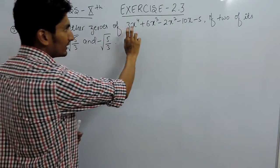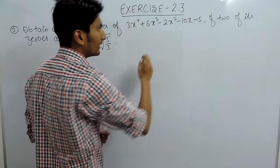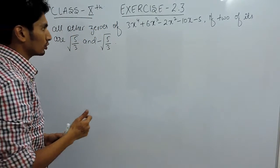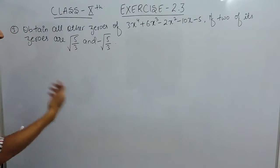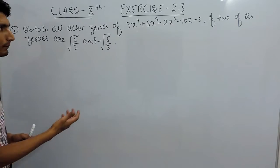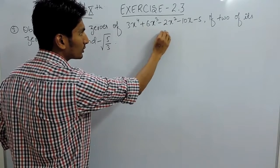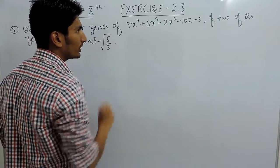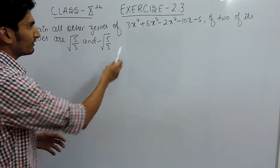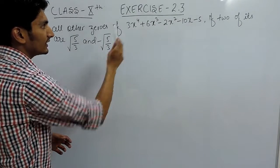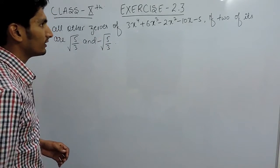When we put these values of x in the polynomial, the value of the whole polynomial becomes 0. These two values of x are given and we have to find out the remaining two, because the maximum power is 4. So the zeros of this polynomial must equal 4 — there are 4 values of x satisfying this equation.